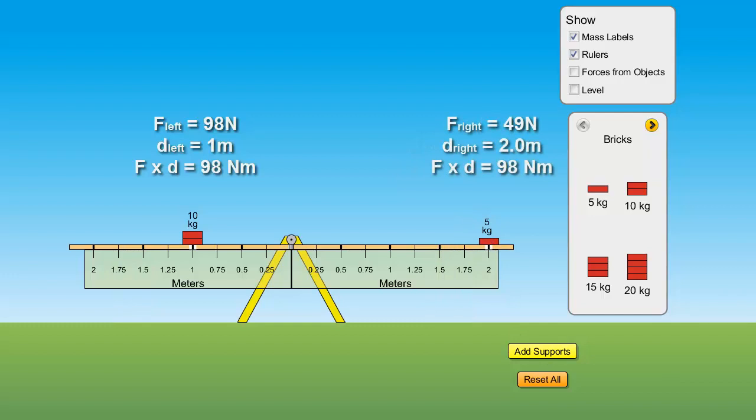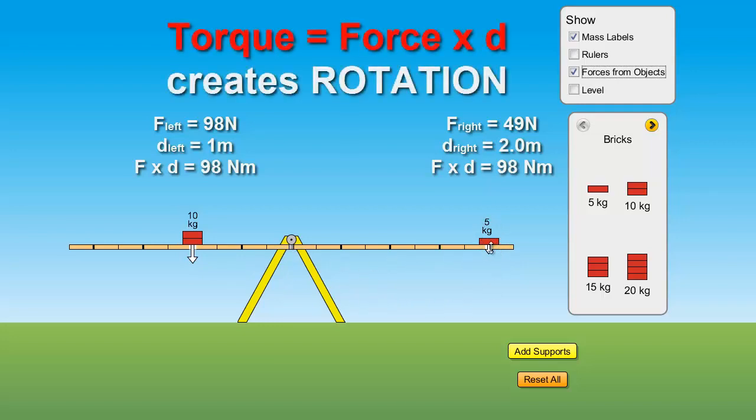And here we see we're in balance. I can even remove the ruler and see what it looks like. So, we have double the force on this side and half the distance. Here we've got half the force and double the distance. So, if we just simply multiply force times distance and get that value to balance, then we say we're in rotational equilibrium. And we call that product of force times distance a torque.